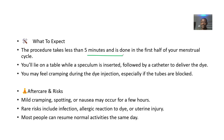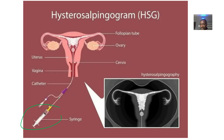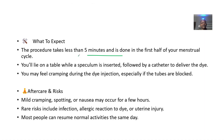What to expect: the procedure takes less than five minutes and is done in the first half of your menstrual cycle. You lie on a table, a speculum is inserted, followed by a catheter through which the dye is delivered — the catheter goes in, not a direct injection.